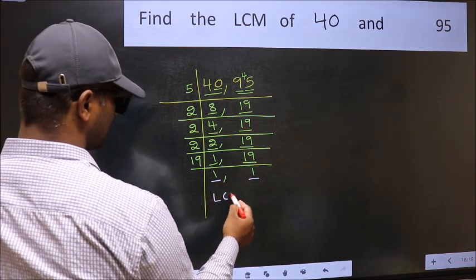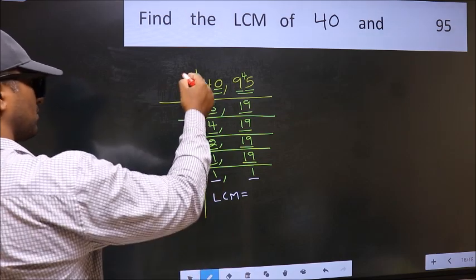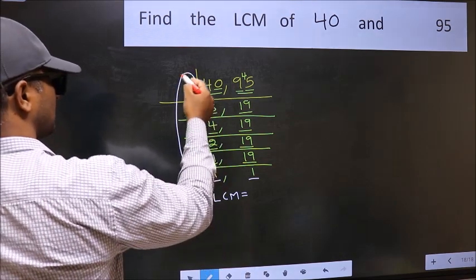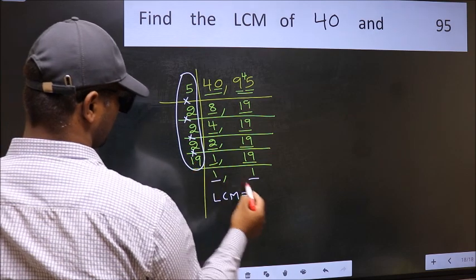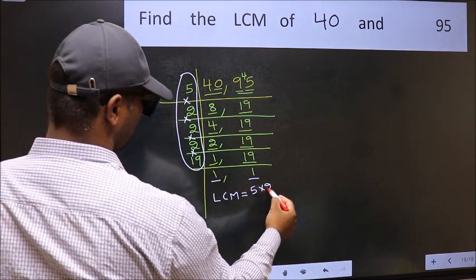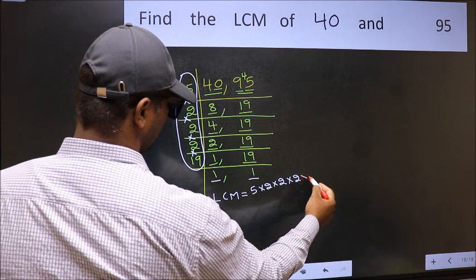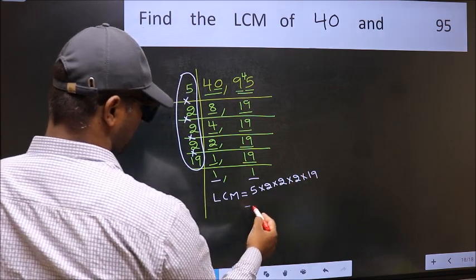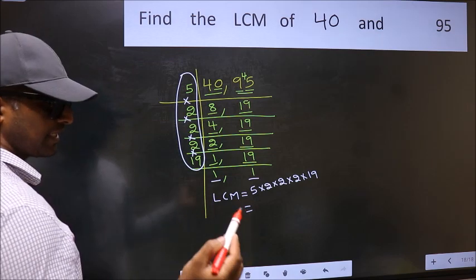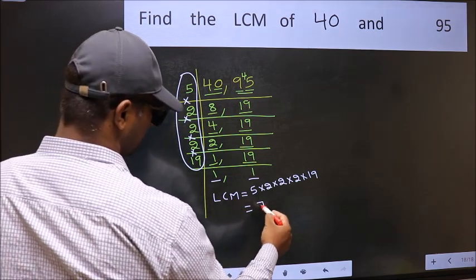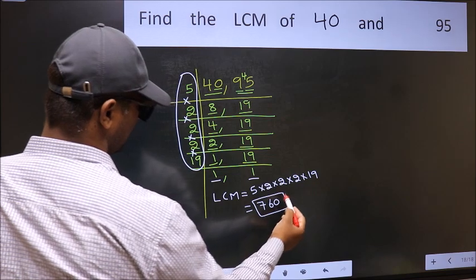So our LCM is the product of these numbers. That is 5 times 2 times 2 times 2 times 2 times 2 times 19. When we multiply these numbers, we get 760. So our LCM is 760.